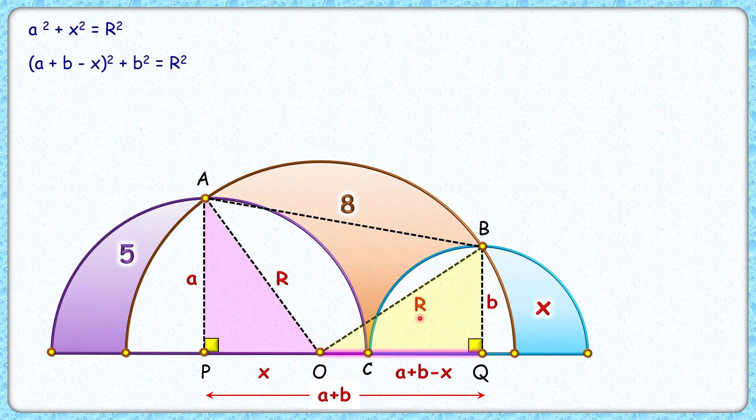Same way in this right angle triangle BQO, applying Pythagoras theorem we'll get B squared plus (A plus B minus X) squared equals R squared. Opening it by applying the identity, we'll get A squared plus B squared plus X squared plus 2AB minus 2AX minus 2BX, and then this B squared equals R squared.